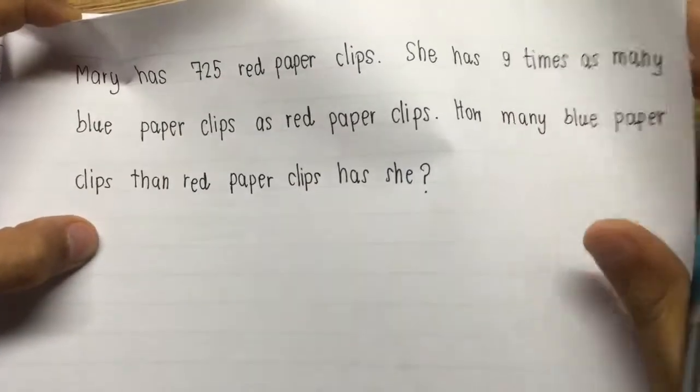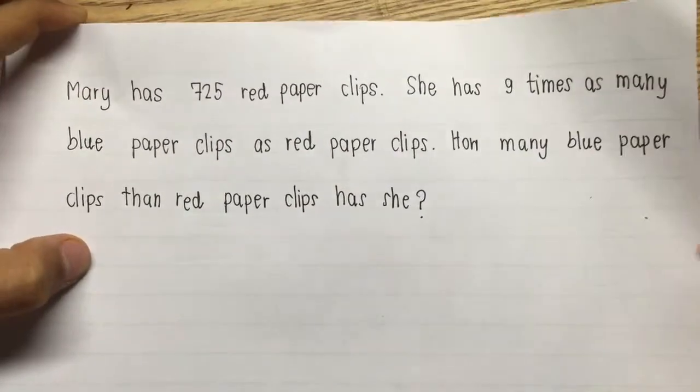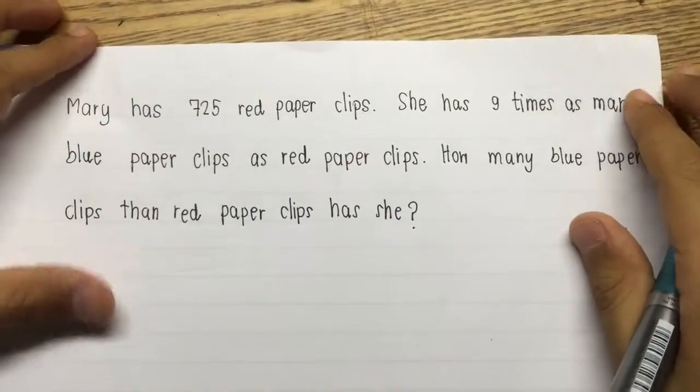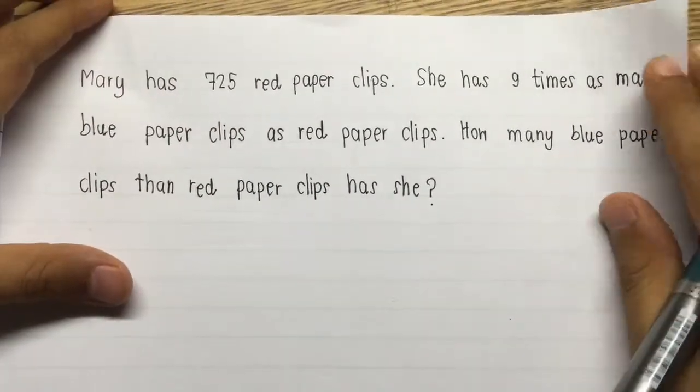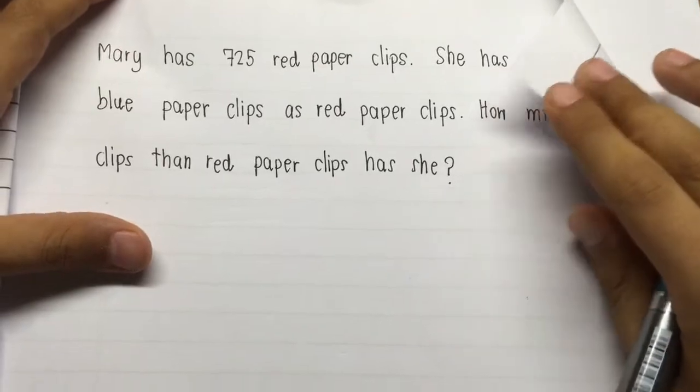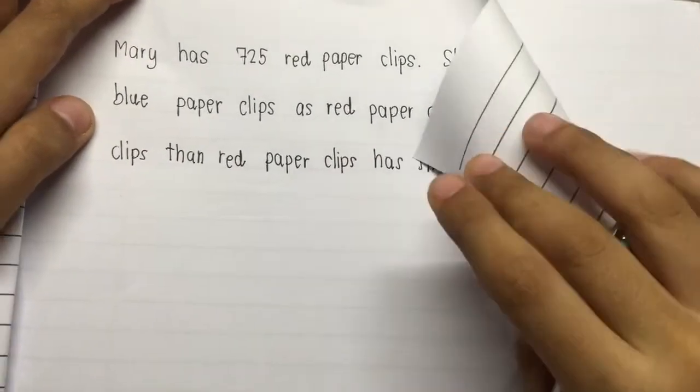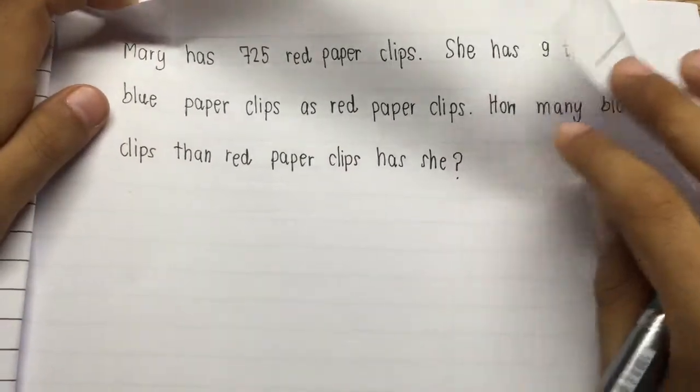Mary has 725 red paperclips. She has 9 times as many blue paperclips as red paperclips. How many blue paperclips than red paperclips has she?